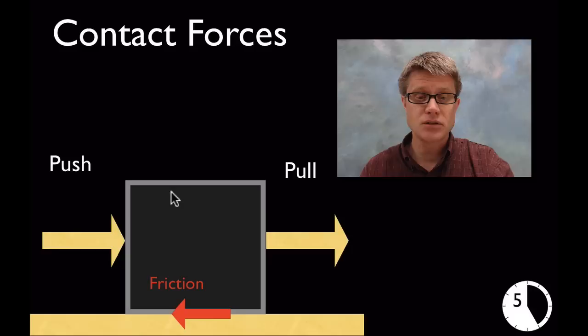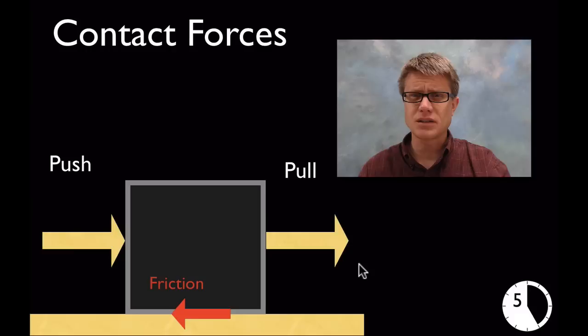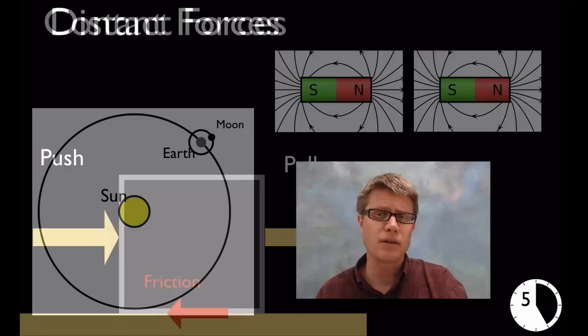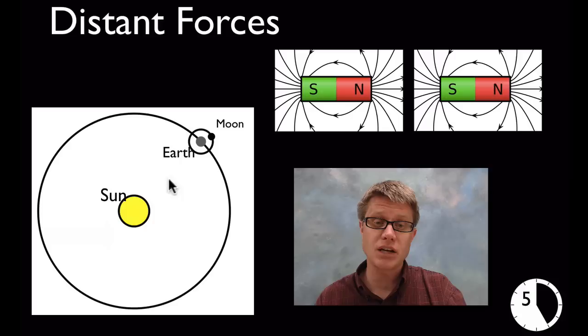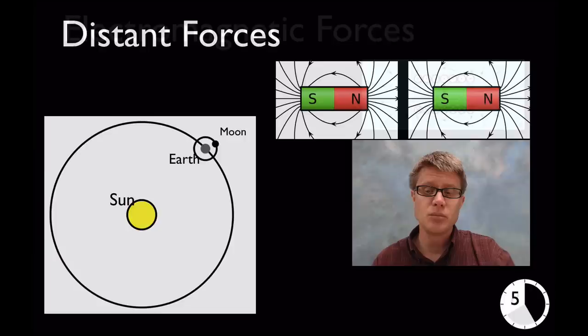In upper elementary grades, start talking about contact forces — forces between objects that are touching. If you push or pull a box across a table, there must be forces slowing it down: frictional forces between objects in contact. But also emphasize forces that are not in contact, at a distance — like gravitational fields around the sun that hold the earth in orbit, hold the moon around the earth, and keep you on the surface. Playing with magnets shows attractive and repulsive forces without touching.